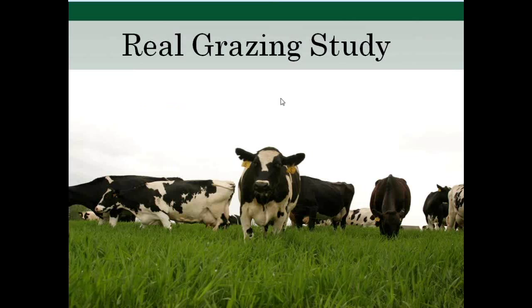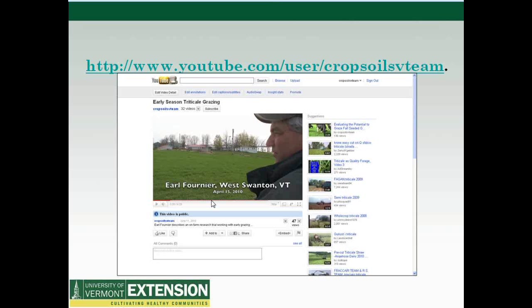We took the next step with a real grazing study, working with Earl Fournier, a dairy farmer in West Swanton, Vermont. Cows were out eating fall-seeded triticale in April of 2010. You can watch two videos about Earl and his project with grazing fall-seeded triticale on our YouTube channel. These were seeded September 20th, 2009. Earl's goal was to reseed an old hayfield — mostly orchard grass — into perennial ryegrass and clover. Instead of just plowing and letting the sod sit over winter, he decided to plow, prepare the ground, seed the winter triticale, and then harvest it the next spring as pasture before putting down his new seeding.